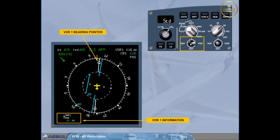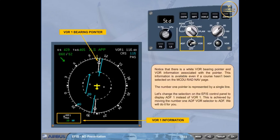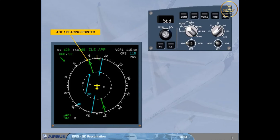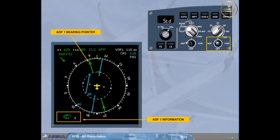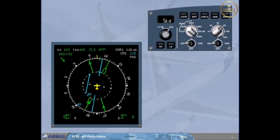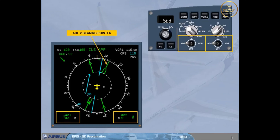This is achieved by moving the number 1 ADF/VOR selector to ADF. The white VOR bearing pointer has been replaced by a green ADF bearing pointer. The VOR information on the bottom left of the display has been replaced by ADF1 information. Notice that the selection of the pointer has not removed the deviation information for VOR1. We will now display the ADF2 bearing pointer by selecting ADF/VOR selector 2 to ADF. The ADF2 bearing pointer is now displayed, represented by a double-lined arrow. At the bottom of the display, there is information on the selected nav aids. Notice that in common with most things on the aircraft, it is number 1 on the left and number 2 on the right.